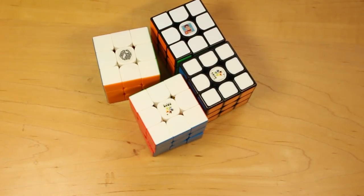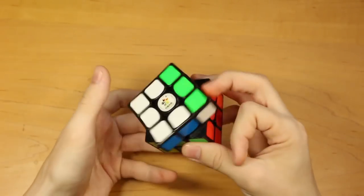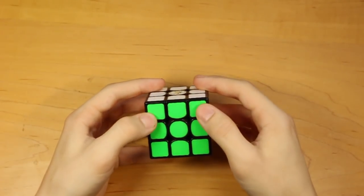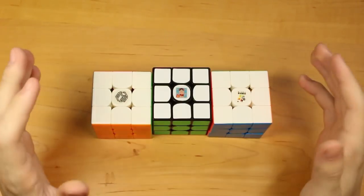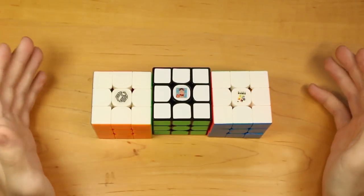My Yuxin cubes. This is a Yuxin Kylin, I think, 3x3. And it's got little tiles, which I think is interesting. And I believe these three are all little magics. And each one of these was given to me by a fan at a competition. So thank you so much.